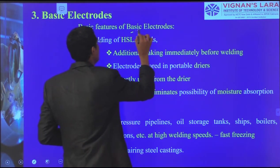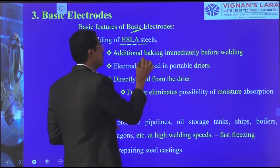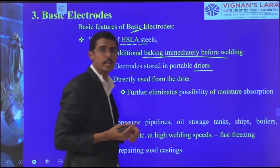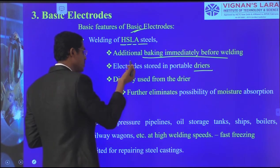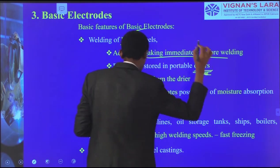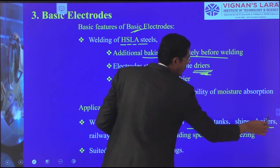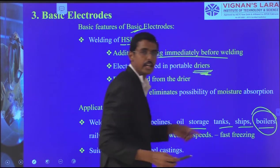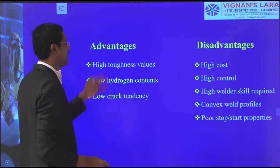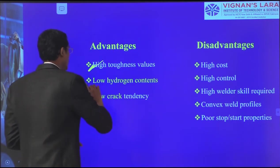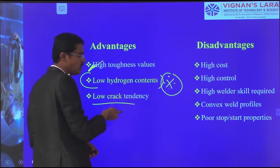Basic electrode features: welding in high strength applications, requiring dry electrodes and baking before use. Applications include pressure pipelines, oil storage tanks, ships, boilers — where pressure is created and quality must be maintained — and railway wagons. Advantages: high toughness, low hydrogen (very important), no cracks. Disadvantages: high cost, high control required.